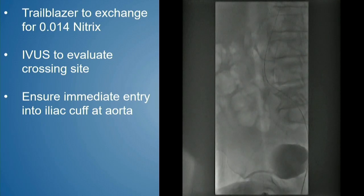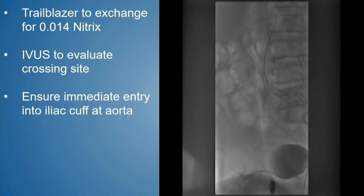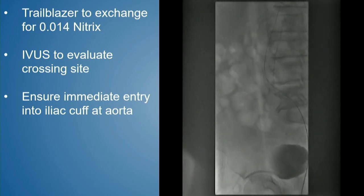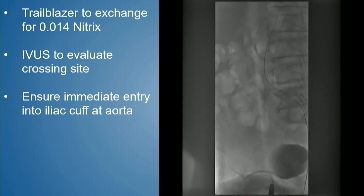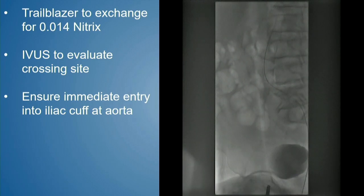We advanced the Trailblazer — you can actually see my hand in the image — chasing it to exchange. Even though we believed based on our steps that we were in the right place, we IVUSed this, using the Omegas IV IVUS, which can typically give enough reach for common iliacs and aortas. Although we don't have the IVUS pictures, we were able to prove by IVUS that we were entering the aorta immediately at the beak where we knew we were, as well as exiting correctly into the common iliac.